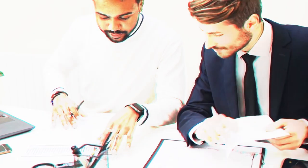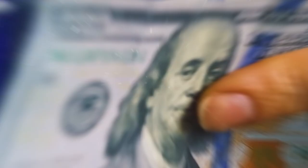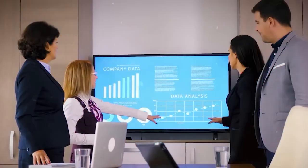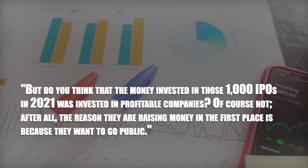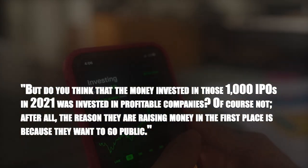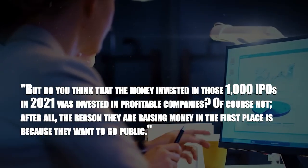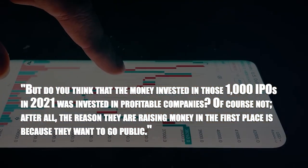Munger gives advice on IPOs. Initial public offerings or IPOs skyrocket when there is money in the system because everyone is trying to raise money for their company by going public, and investors are desperate to find a place to invest their money. He asks, but do you think that the money invested in those 1,000 IPOs in 2021 was invested in profitable companies? Of course not. After all, the reason they are raising money in the first place is because they want to go public.